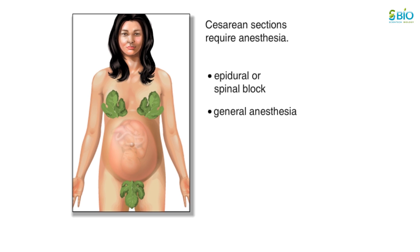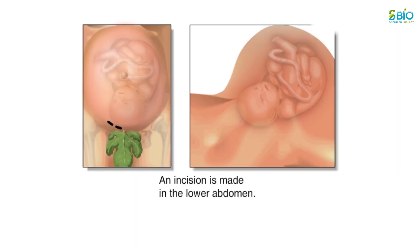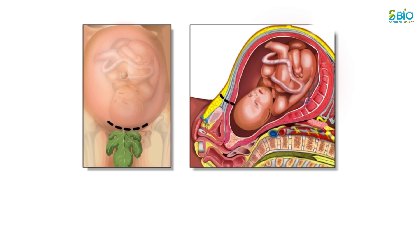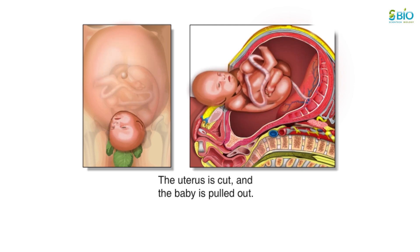An incision is made in the lower abdomen, followed by an incision made in the uterus. There is no pain associated with either of these incisions because of the anesthesia. The doctor will then open the uterus and the amniotic sac.